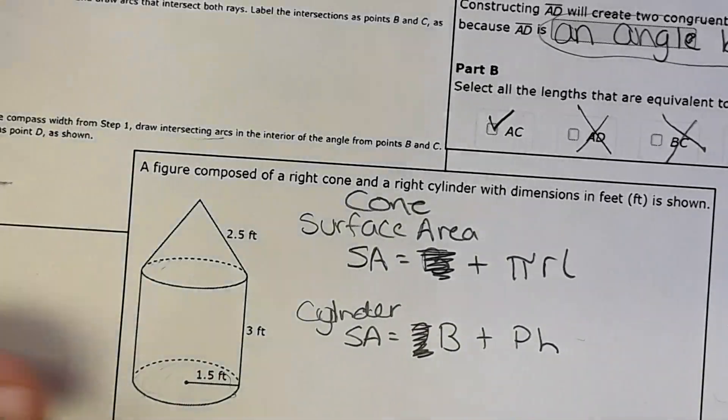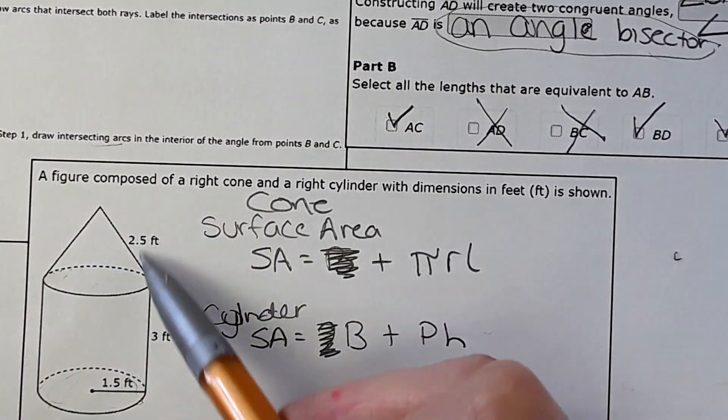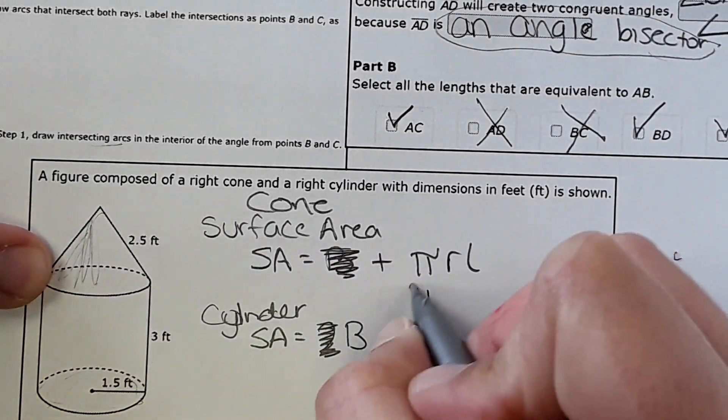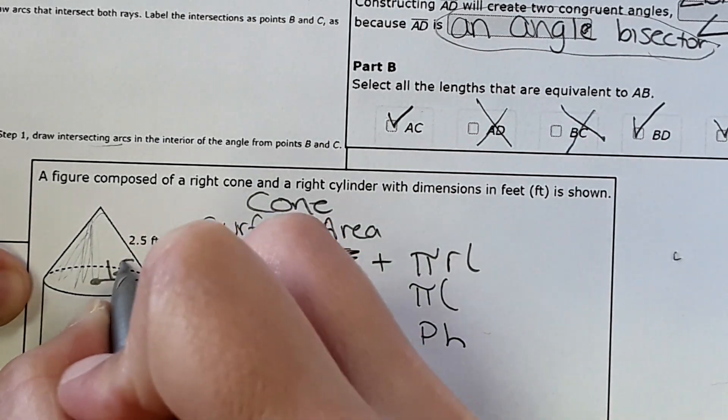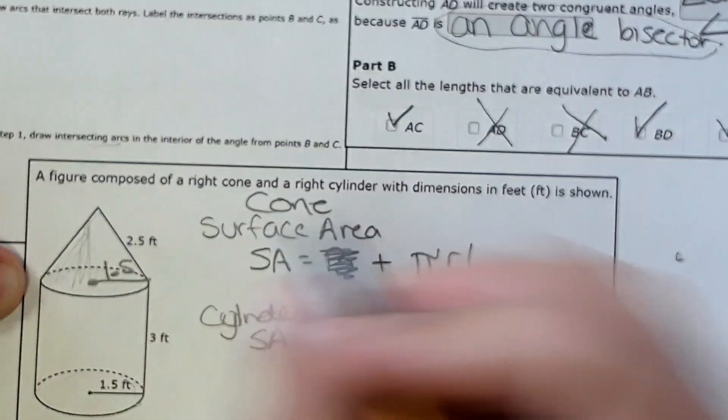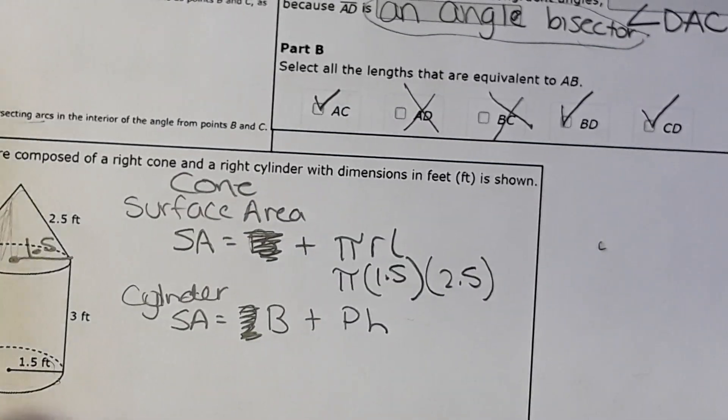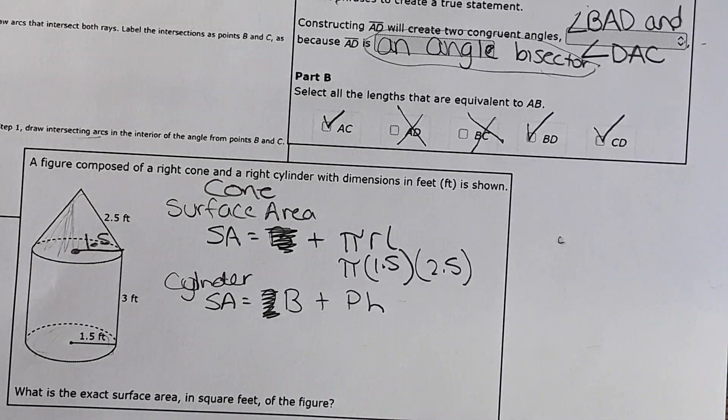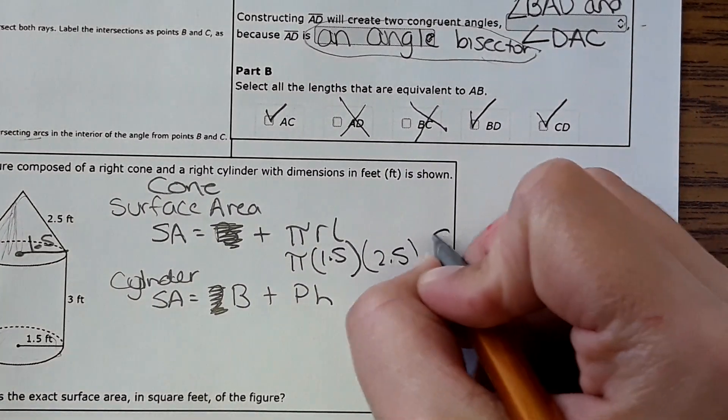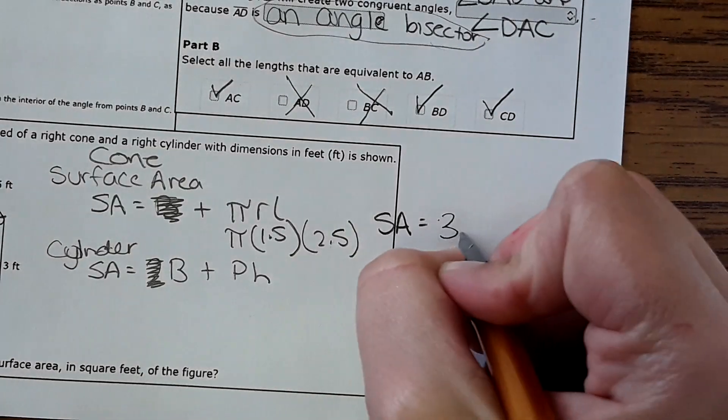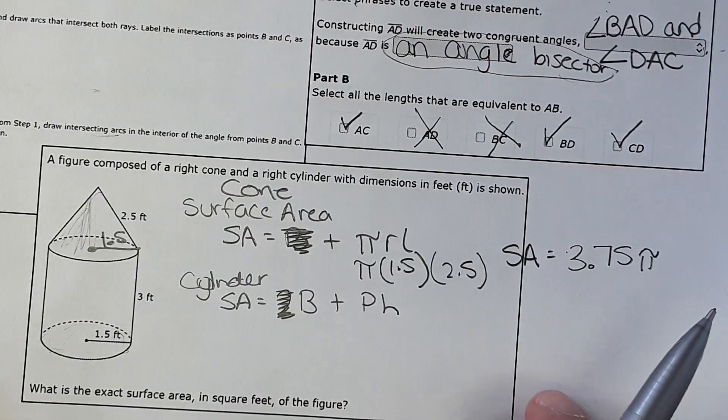Now we can start plugging in numbers for the surface area of the lateral part of the cone. By the way, sometimes they ask for lateral surface area - it just means all the way around not including the base. Lateral surface area of the cone would be pi times the radius of this cone, which would be 1.5, and then the slant height is 2.5. Multiply this out, we're going to keep everything in terms of pi because it is the most accurate way to go without rounding. 1.5 times 2.5 is 3.75 pi - that's the surface area of the lateral part of the cone.